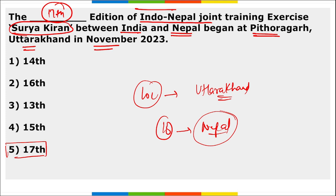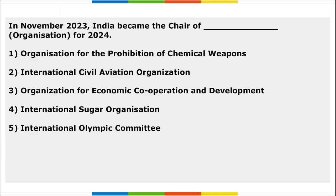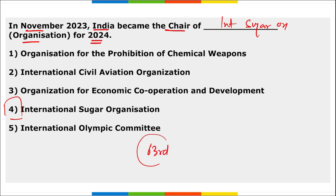Next: in November, India became the chair of the International Sugar Organization (ISO) for 2024. ISO is the apex international body on sugar and related products. This announcement was made during the 63rd council meeting of ISO in London, UK. As chair of ISO, India will lead the global sugar sector.